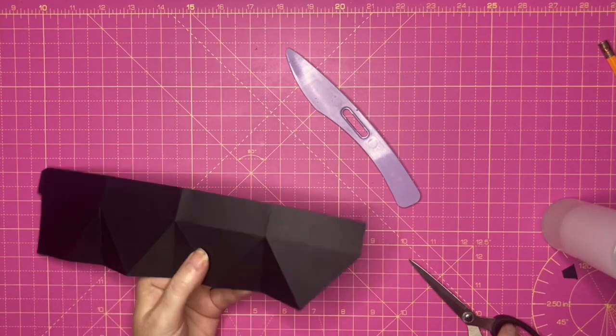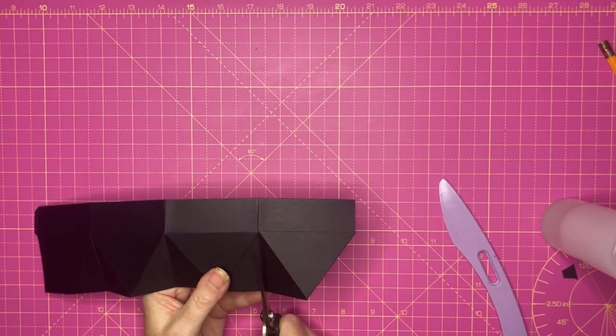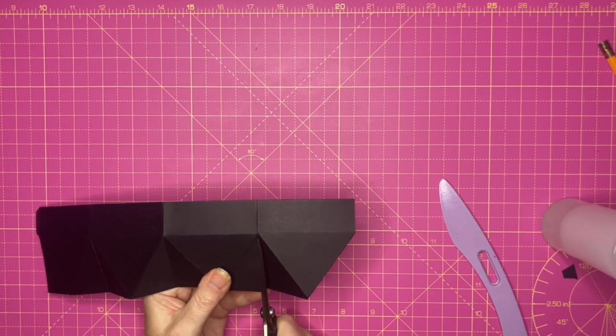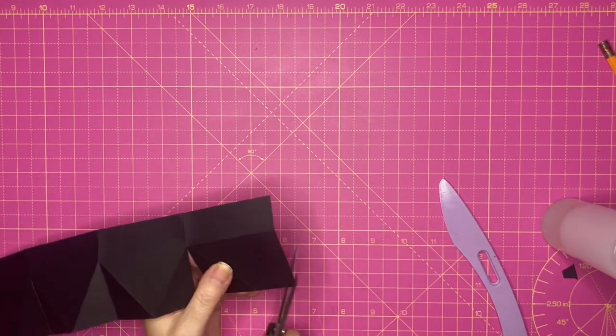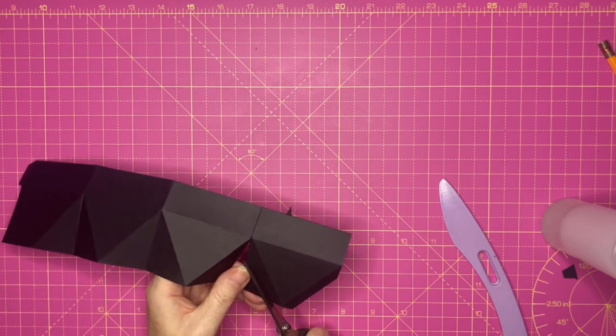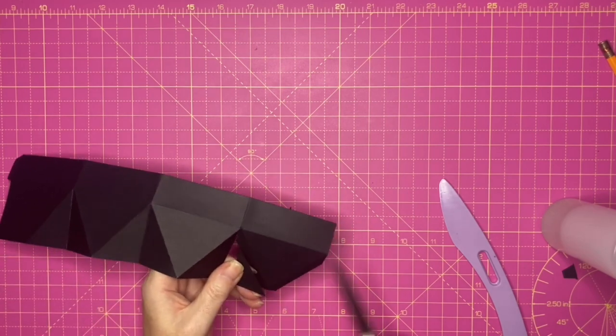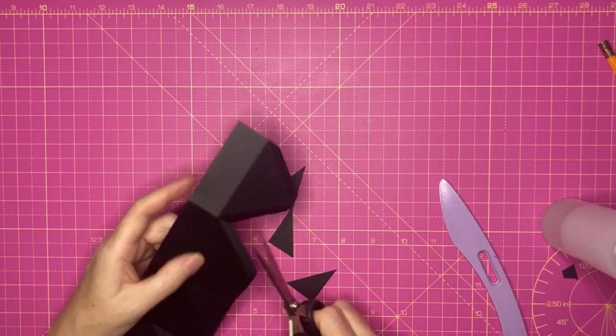I'm now going to cut down each of these top score lines and I'm going to cut away a lot of the triangle so we lose the bulk when we join these together.